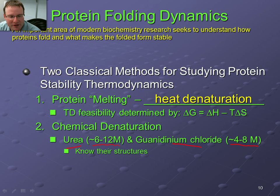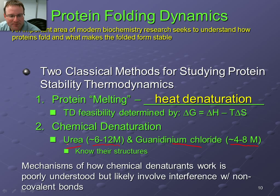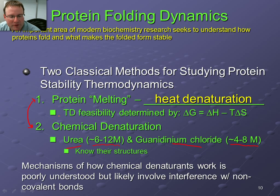Looking at the structures of these denaturants helps us think about how chemical denaturants might work. Many studies have shown that for good protein melting or chemical denaturation experiments, you can actually get delta G values for unfolding that are comparable for both methods, so they're used pretty interchangeably in practice.